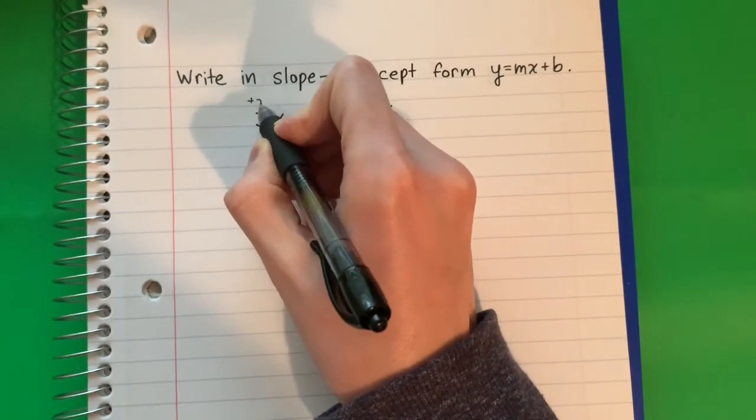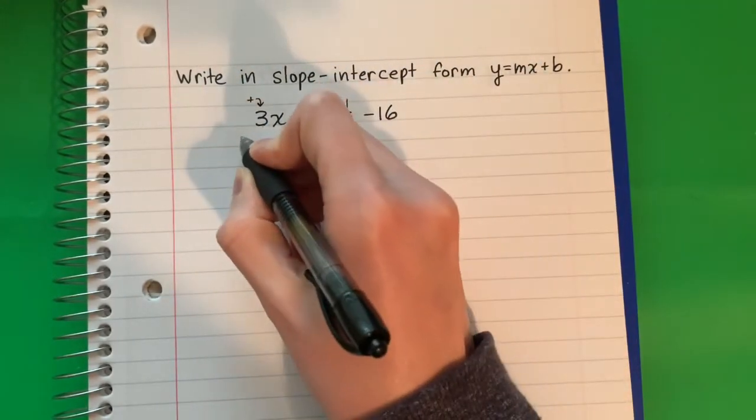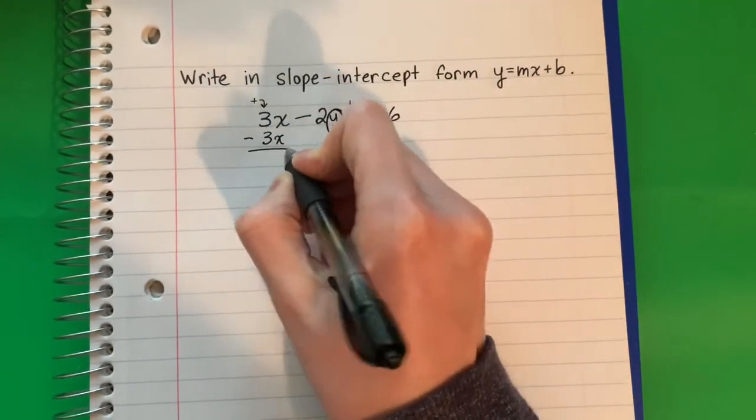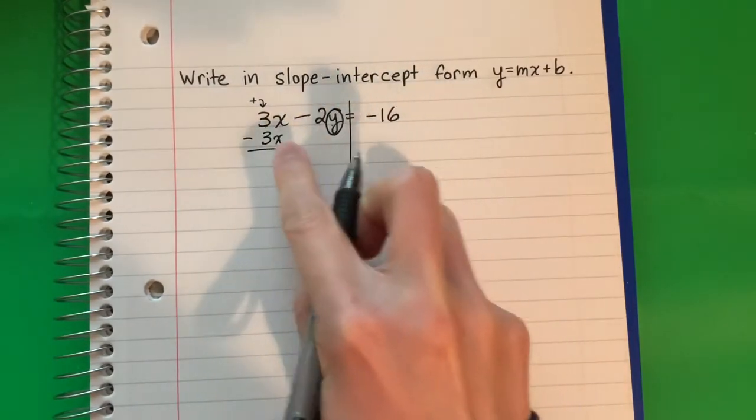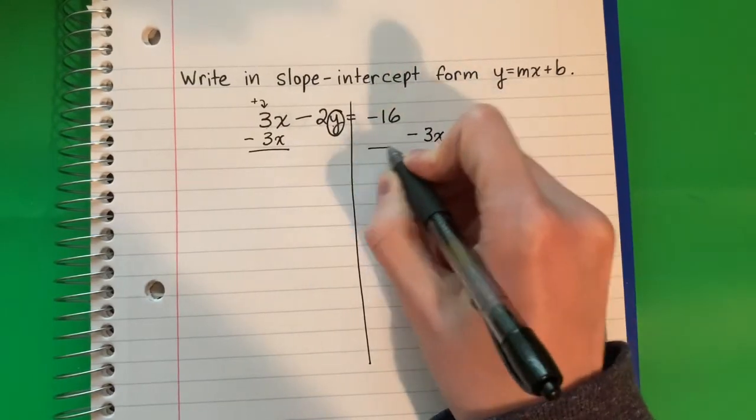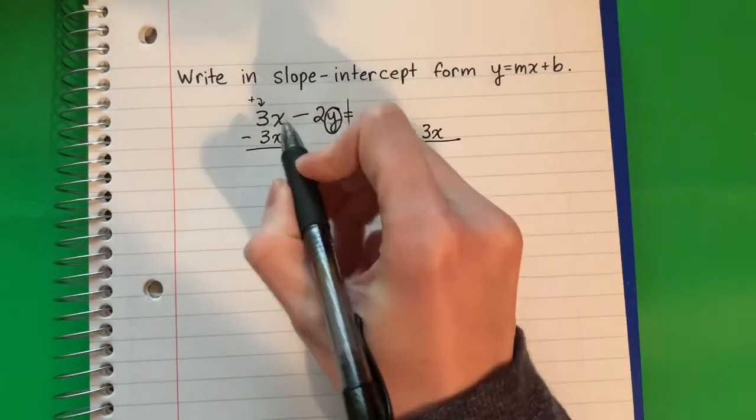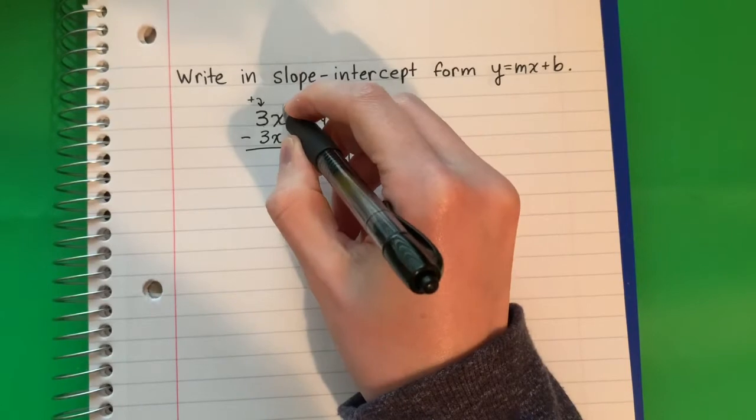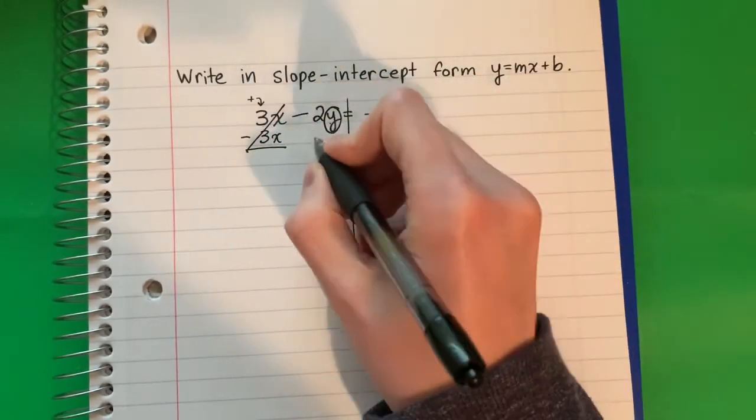So this is positive 3x. The opposite is negative. I'm going to write minus 3x. And I'm going to copy this here. This has x. This does not have x. So I'm going to put it off to the side because they are different. 3x minus 3x cancels.